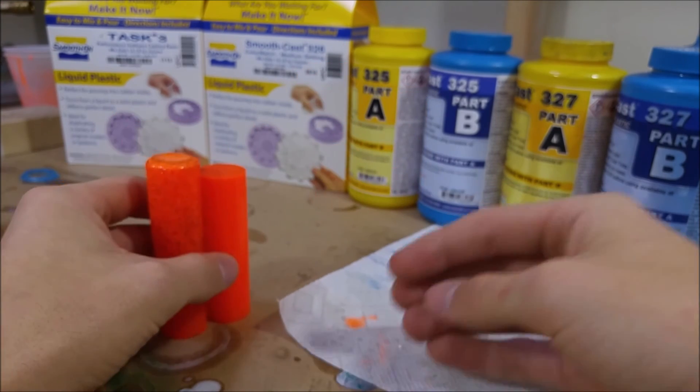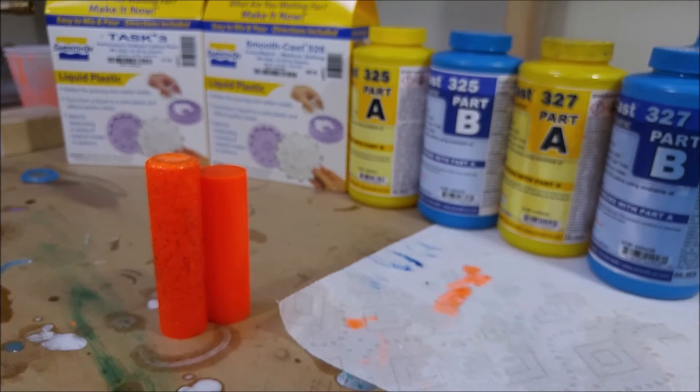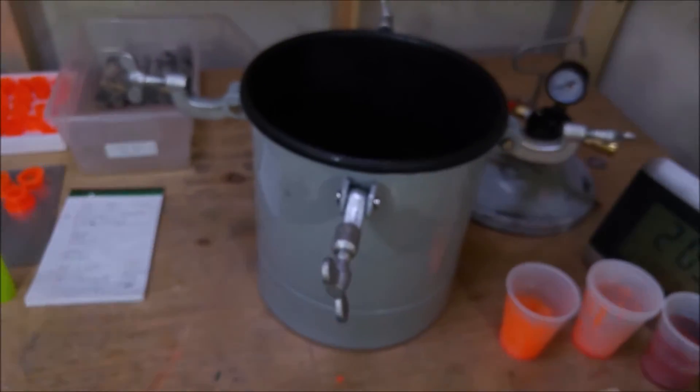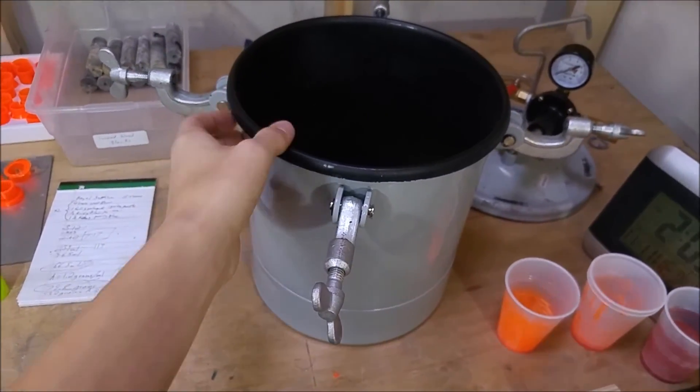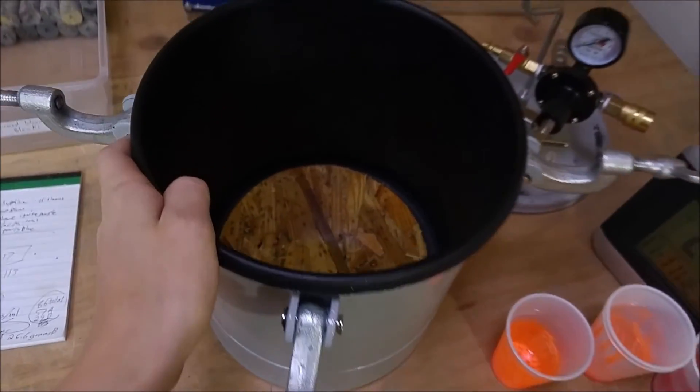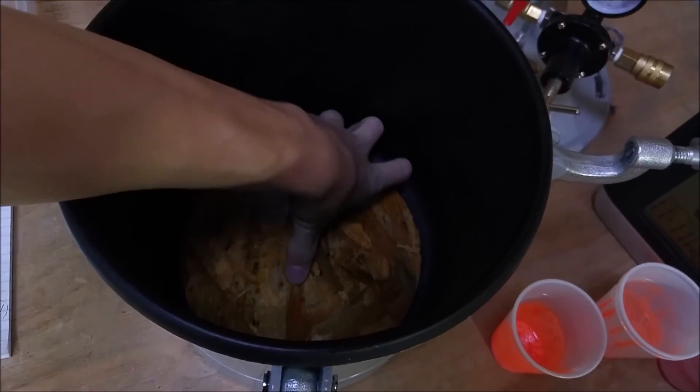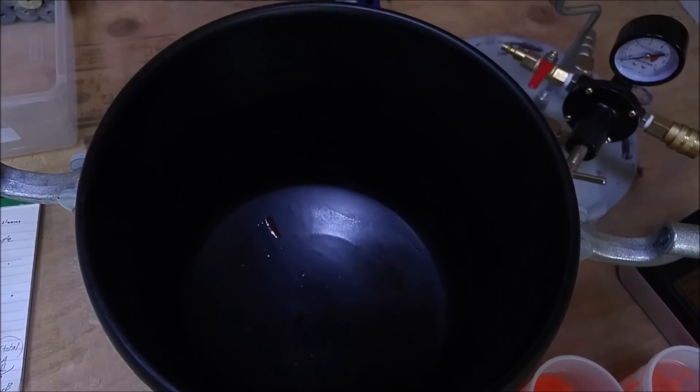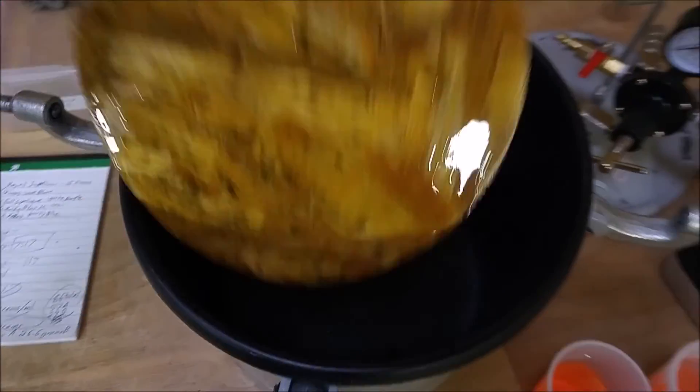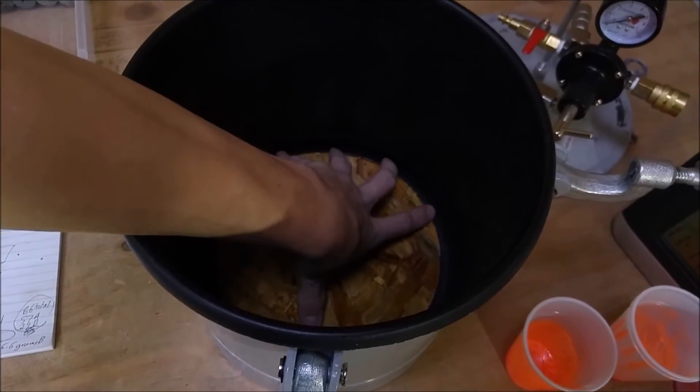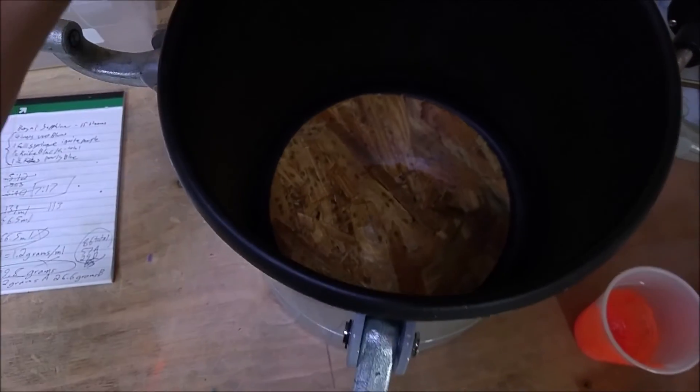And just in case you're curious as to what a pressure pot is or how you go about getting one, this is one that I converted from a Harbor Freight pressure pot for paint. I just have a piece of wood in the bottom here because it's a curved bottom as you might be able to see in the light there. And I don't want things tipping over when I put them in there. This just gives me a flat bottom to work with.